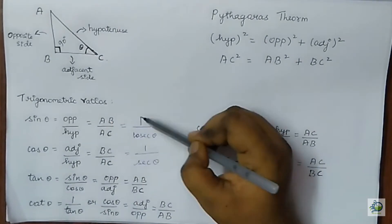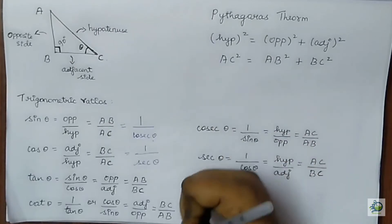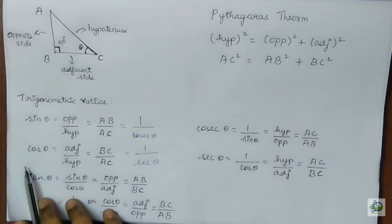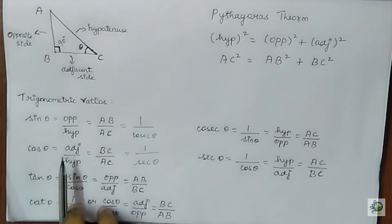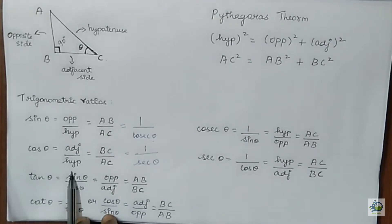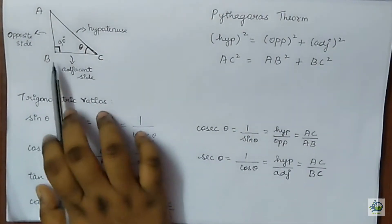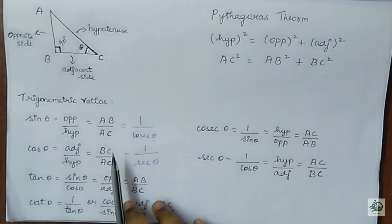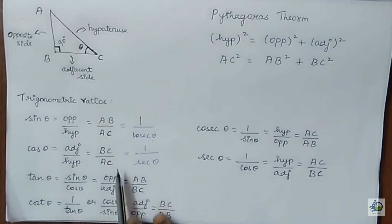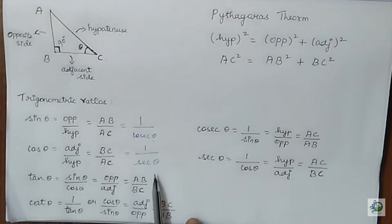Sin theta can also be written as 1 by cosecant theta. Next, cos theta is written as adjacent by hypotenuse. According to this triangle, the adjacent side is BC and the hypotenuse is AC, so cos theta equals BC by AC. Cos theta can also be written as 1 by secant theta.